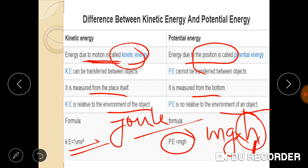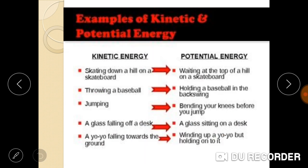Key differences between kinetic and potential energy: kinetic energy can be transferred between objects, but potential energy cannot be transferred — it is measured relative to a reference point (the bottom). Kinetic energy is related to the motion of the object, while potential energy is not related to the environment of the object. Examples: skating down a hill involves potential energy converting to kinetic energy; throwing a baseball involves kinetic energy; jumping also involves kinetic energy.